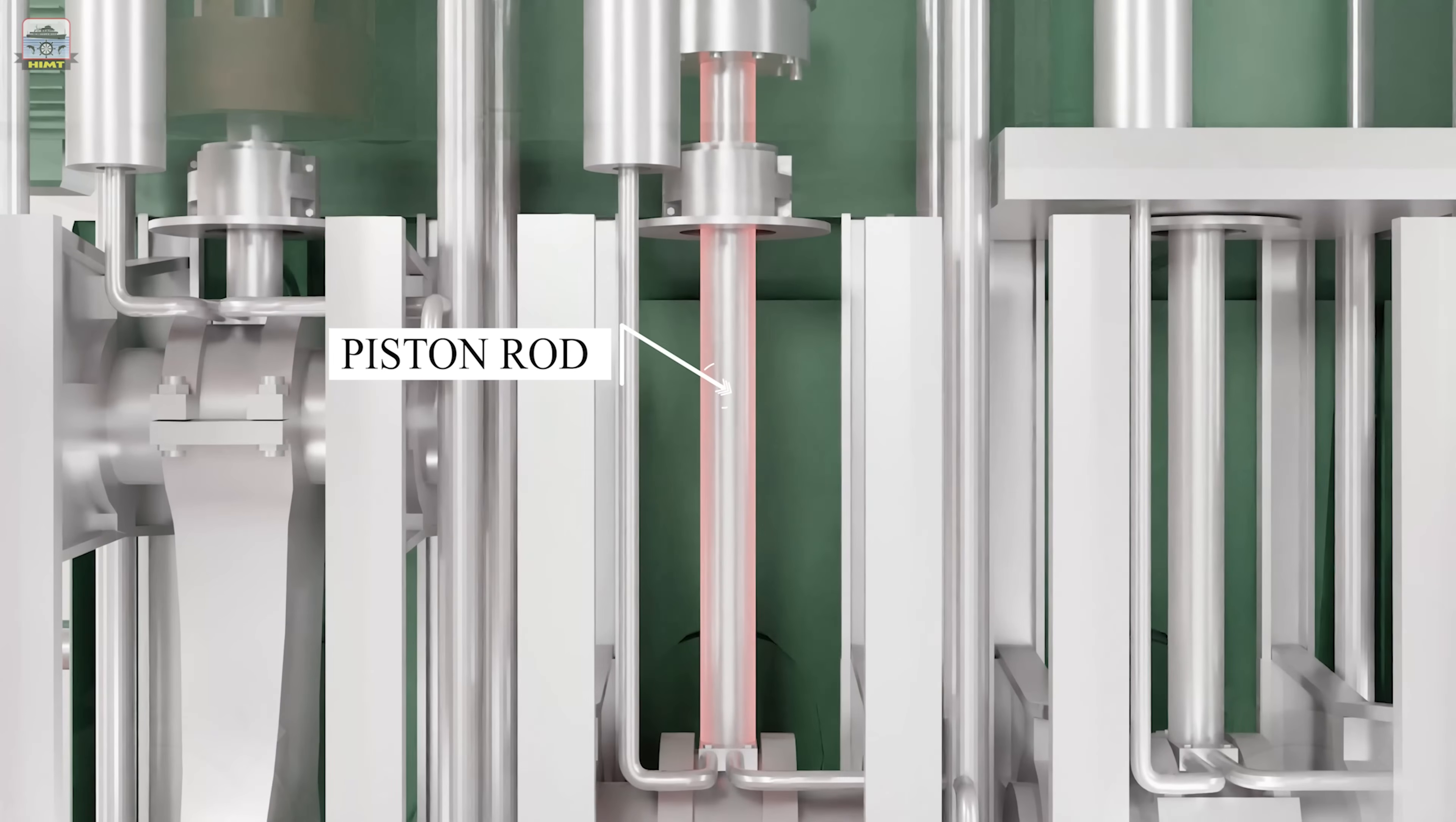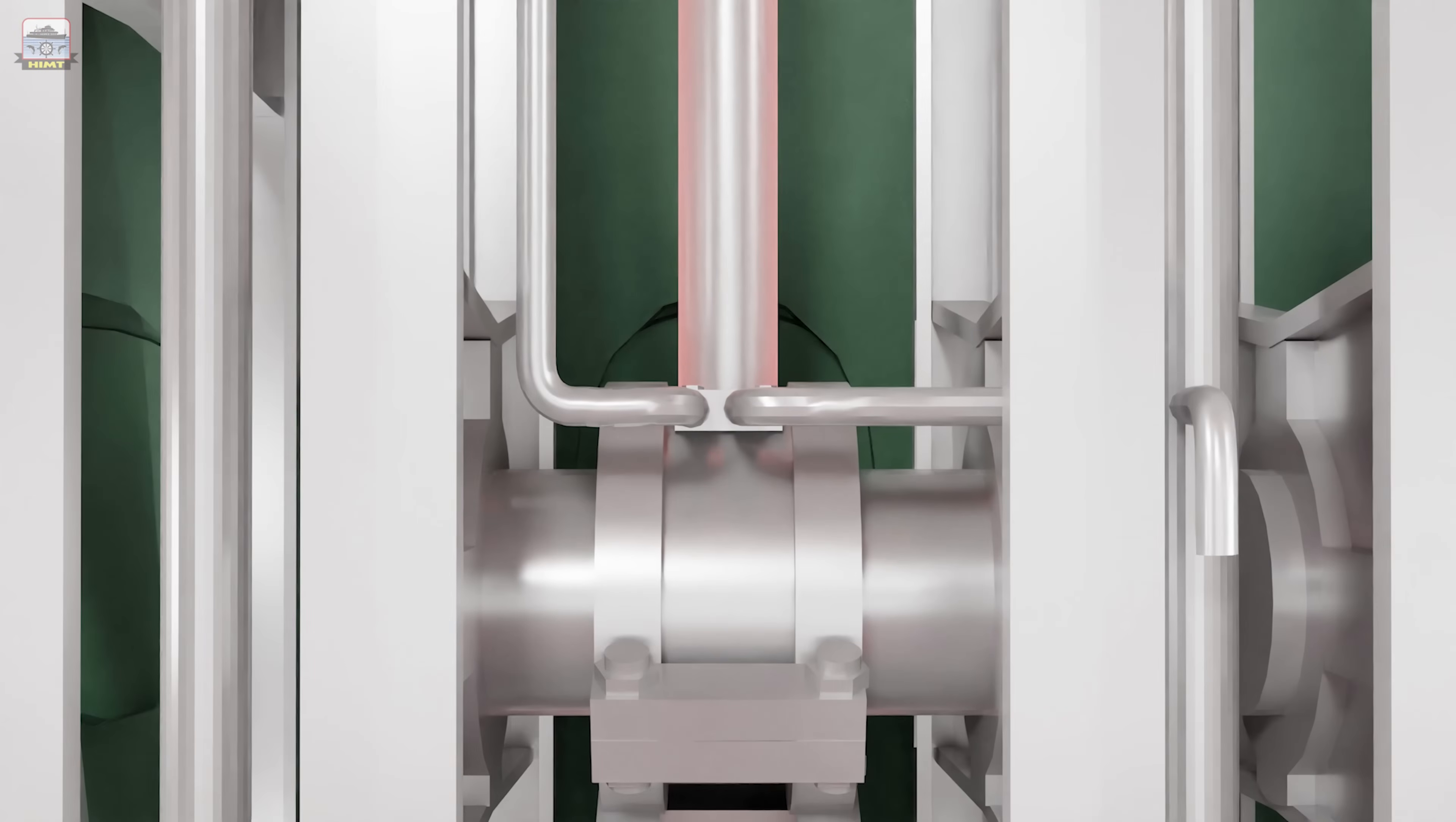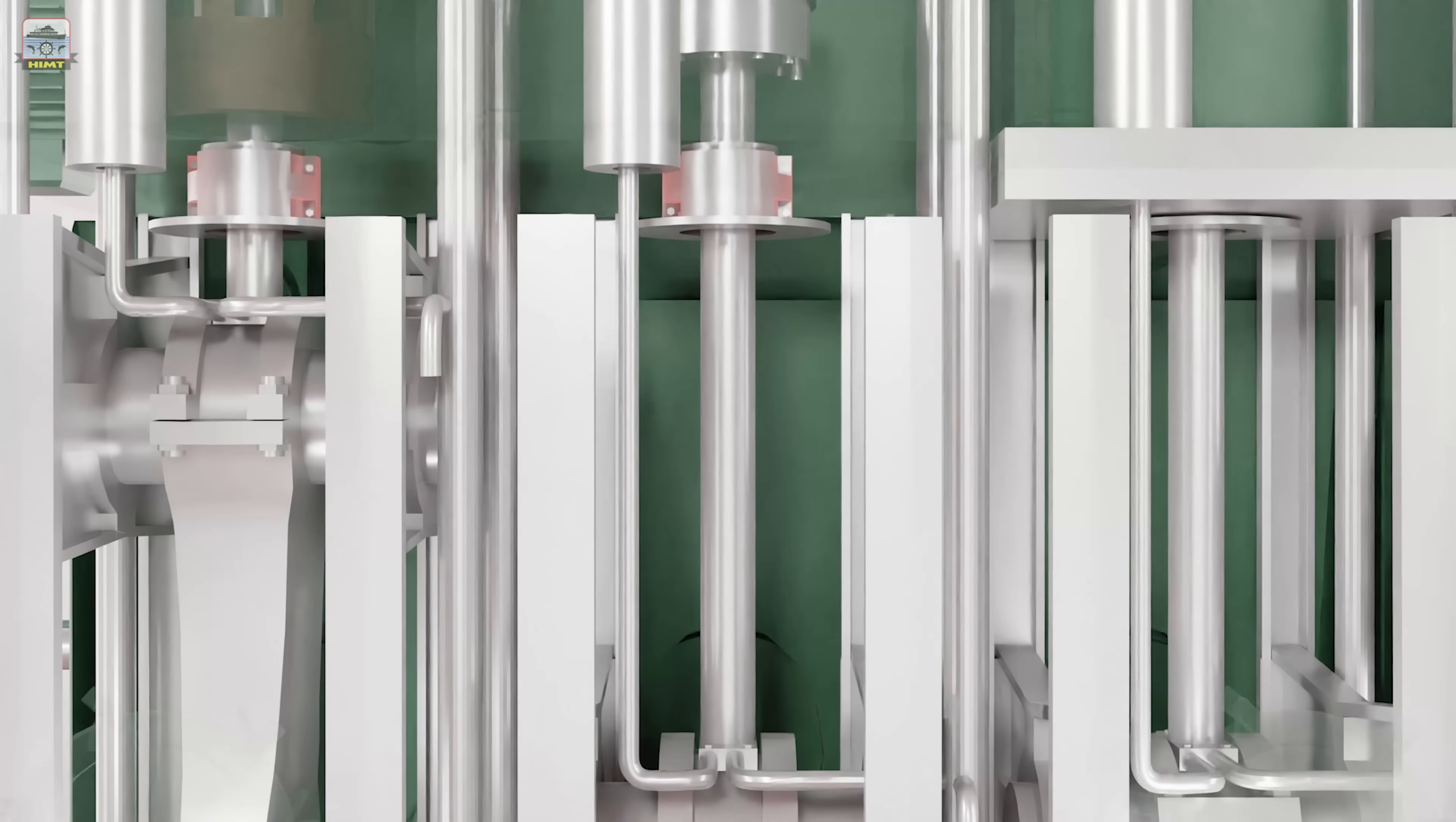Piston rods help in transmitting the power produced in the combustion space to the cross-head. The top end of the rod is attached to the underside of the piston and the bottom end is connected to the cross-head pin. The piston rod passes through the stuffing box.